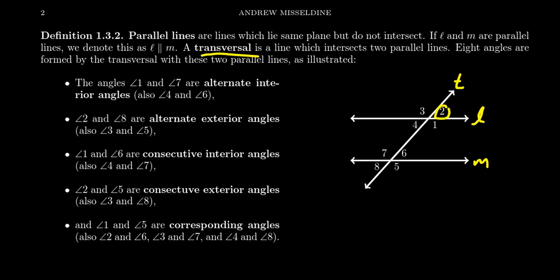With that, we can describe every pair of angles with one name or another. For example, taking angle two: angle one is its supplement, three is also its supplement, and four is a vertical angle to two. Angle six is the corresponding angle to two. Angle five is the consecutive exterior angle to two. Angle eight is the alternate exterior angle to two.